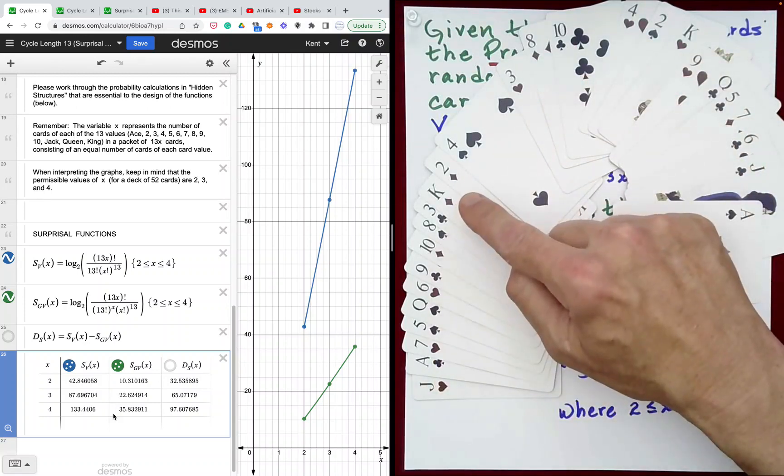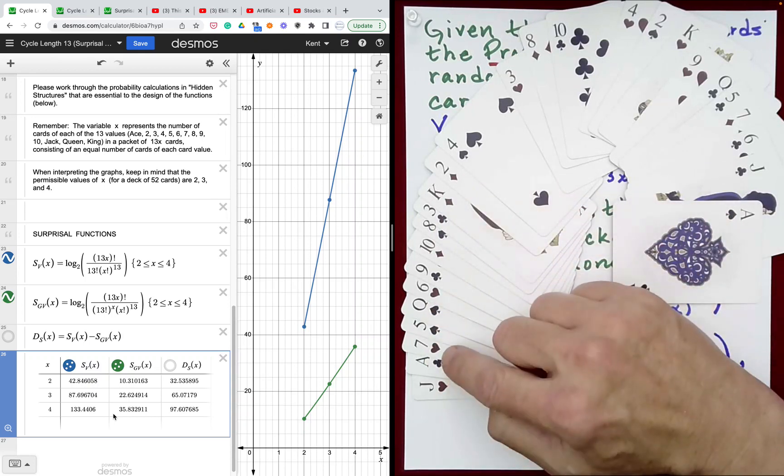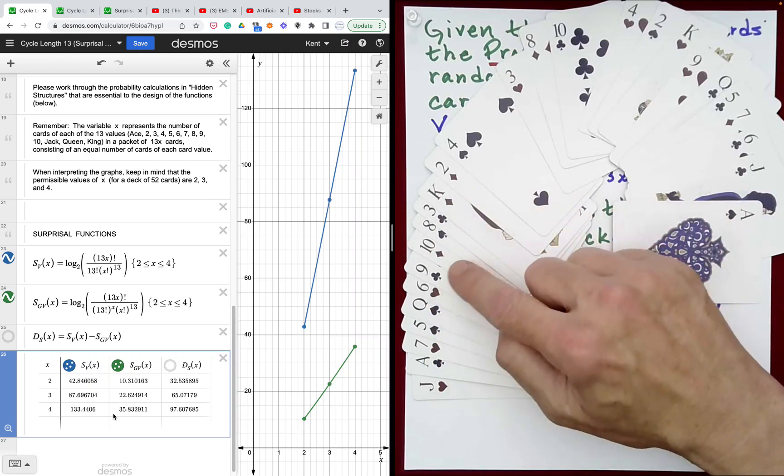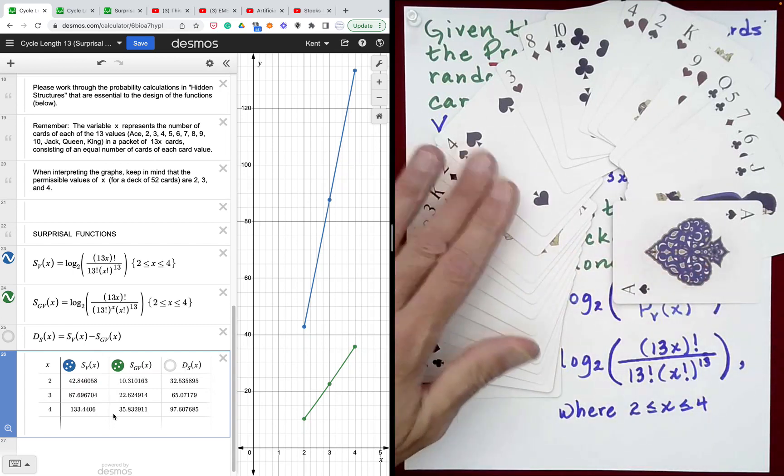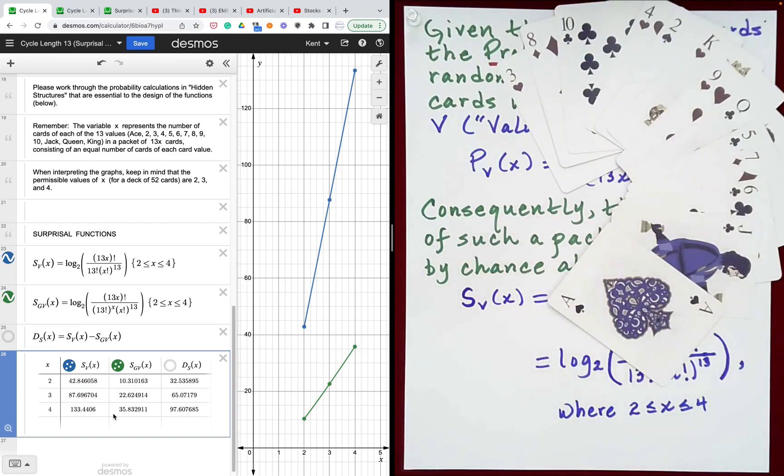Ace, 2, 3, 4, 5, 6, 7, 8, 9, 10, Jack, Queen, King. There you go. The next set of 13 has exactly one of each card value. And that leaves us with the bottom 13 cards.